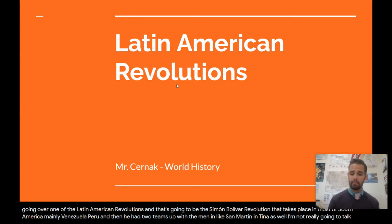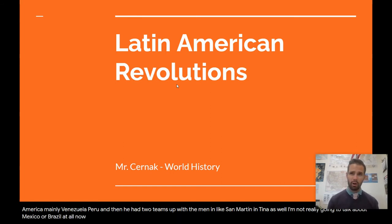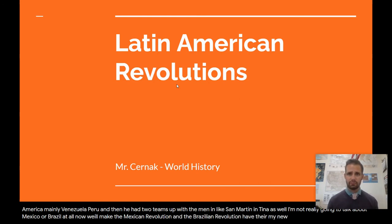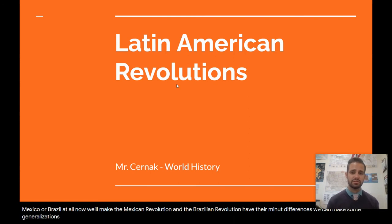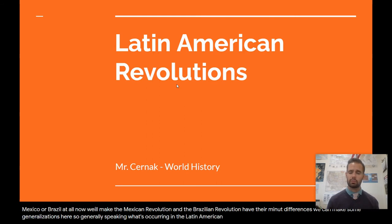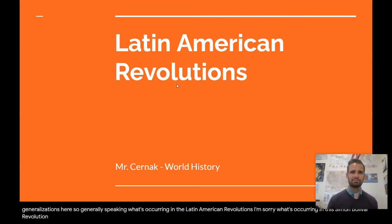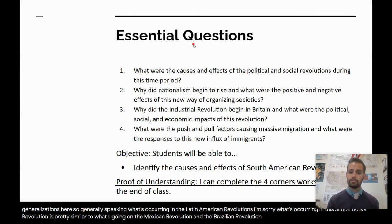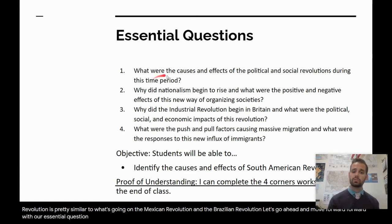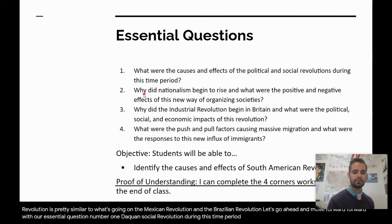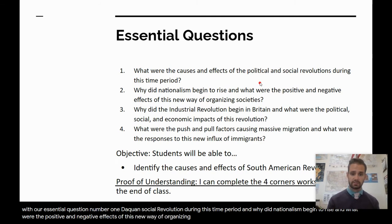I'm not really going to talk about Mexico or Brazil at all. While the Mexican Revolution and the Brazilian Revolution have their minute differences, we can make some generalizations here. What's occurring in the Simón Bolívar Revolution is pretty similar to what's going on in the Mexican Revolution and the Brazilian Revolution. Let's go ahead and move forward with our essential questions: what were the causes and effects of the political and social revolutions during this time period, why did nationalism begin to rise, and what were the positive and negative effects of this new way of organizing society?